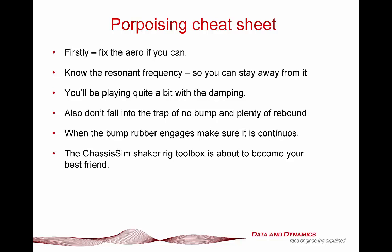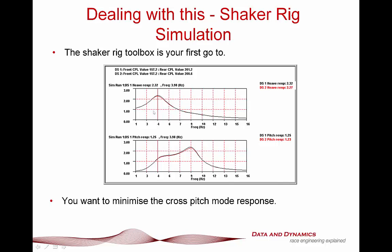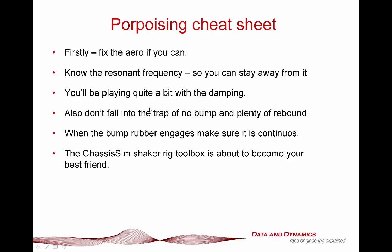Know your resonant frequency so you can stay away from it. What will tend to happen is that if you've got a frequency of bumps on the circuit at about 5 to 6 Hz and the resonant frequency of the car is also about 5 to 6 Hz, corresponding to your resonant pitch mode, you're going to have all sorts of dramas. Knowing where that resonant frequency is means going back to the simulation and seeing where the peak output-on-input is. In this case, the resonant frequency is about 4 Hz.